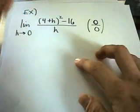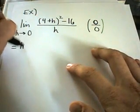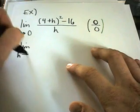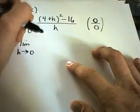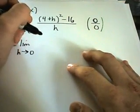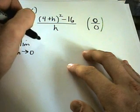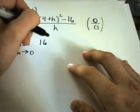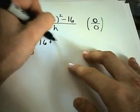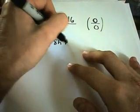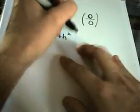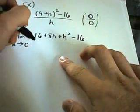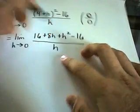is there's this 4 plus h squared. So we could expand that out and see if something cancels out. Remember this is 4 plus h times 4 plus h. So we'll get 16 plus 4h plus 4h. That'll give us plus 8h plus h squared minus 16 all over h.